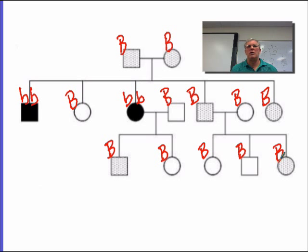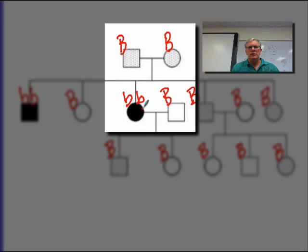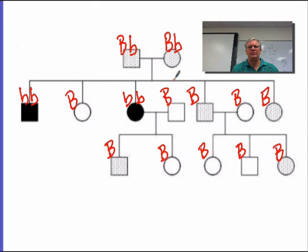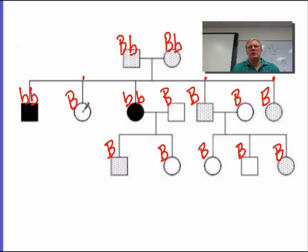Everybody that doesn't have the disorder has at least a big B. Let's see if we can figure out the second allele for the ones that don't have the condition. When you have children with a recessive condition, they got a recessive allele from both parents — a little b from mom and a little b from dad. That tells us mom and dad must both be heterozygous, big B, little b. Now what about the remainder of the children? This daughter could have gotten a big B or a little b from mom or dad, so she could be big B, big B or big B, little b.